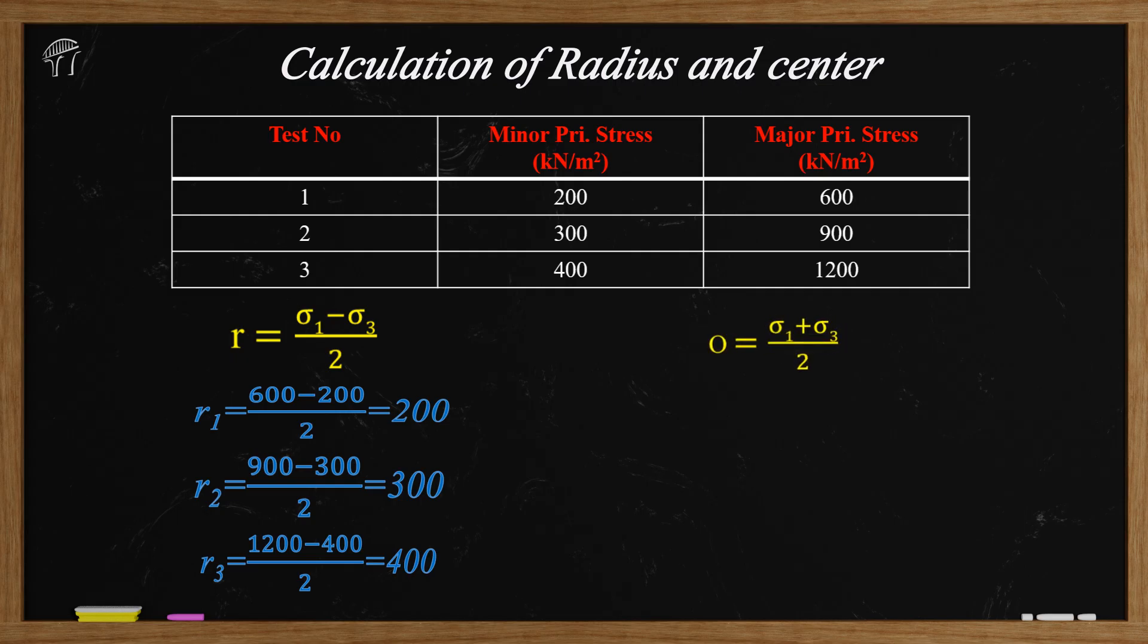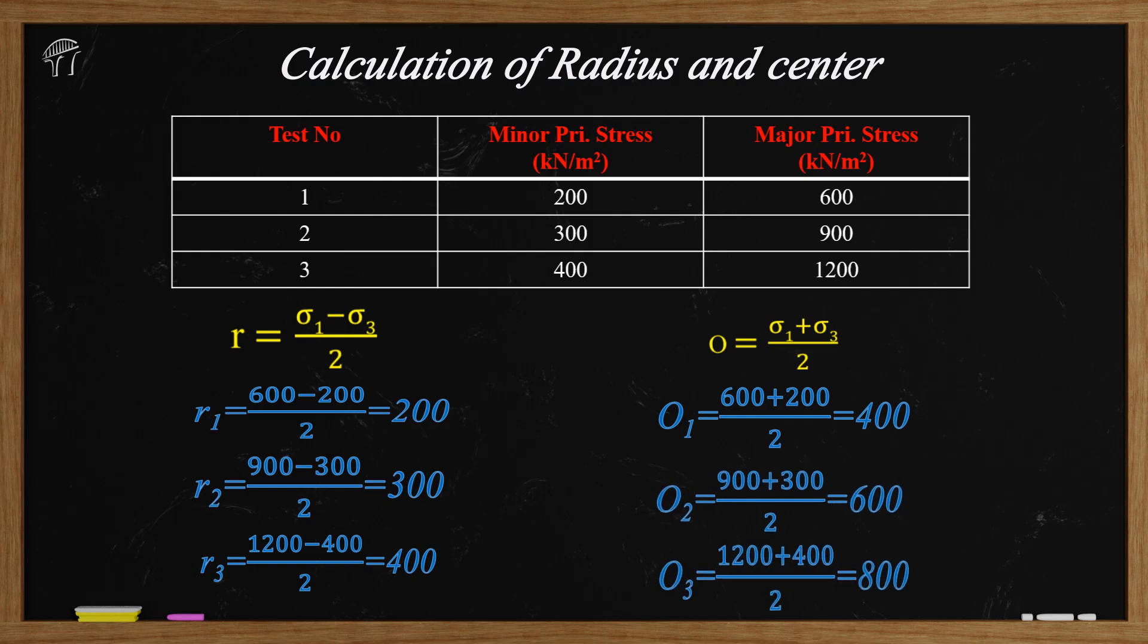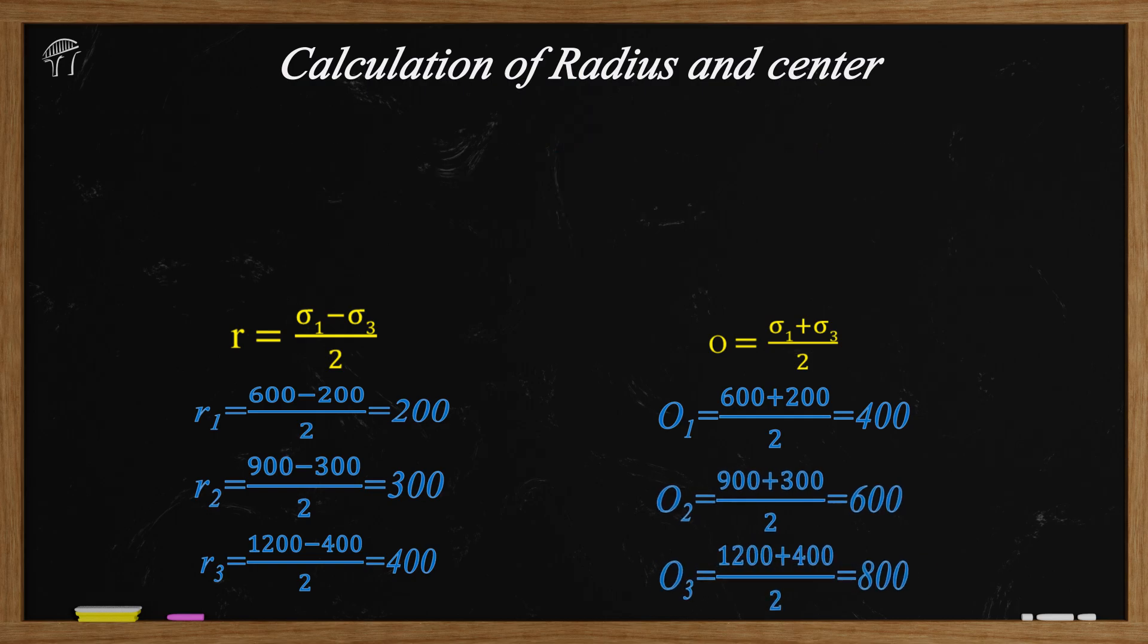Similarly, we will calculate the center of each Mohr circle. The first circle will be located at a distance o1 equals 200 plus 600 by 2 that is 400. It will be from the origin of the plot. Similarly, the center of second and third circle are located at a distance 600 and 800 respectively as you can see over here I have done the calculation.